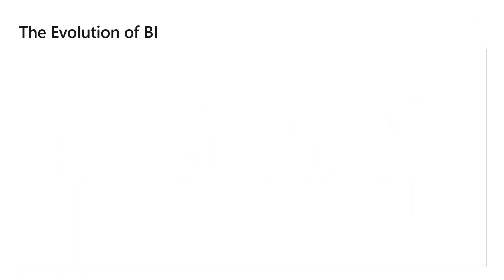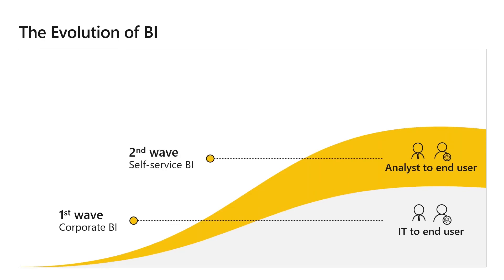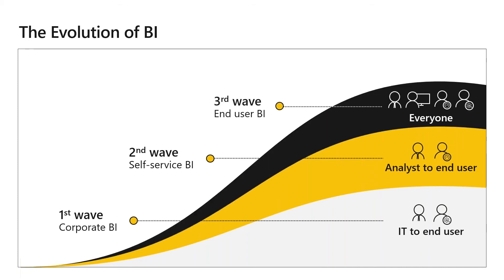The way business intelligence is used in organizations has changed significantly over the years. One way to understand these changes is to think of the three waves of BI. In the early days, organizations would have a team holding all requests for insights — not very scalable, and it could take a long time for answers to get back. To solve this, the second approach put BI capabilities in the hands of analysts who understand the business. With Power BI, we want to enable everyone in the organization to analyze their data, ask questions, and act based on the insights they find.